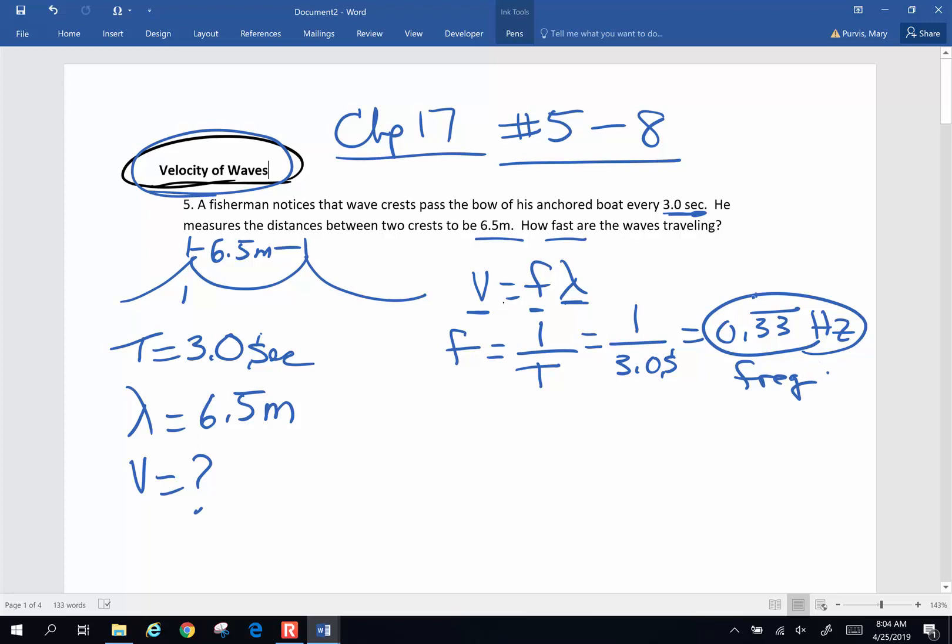Now I can plug that in here. Velocity is frequency times wavelength, 0.33 repeating hertz, times the wavelength of 6.50 meters. And remember, we always try and keep 3 sig figs if possible. And if I pick up my calculator here, times 6.5 meters, I end up with 2.166 repeating.